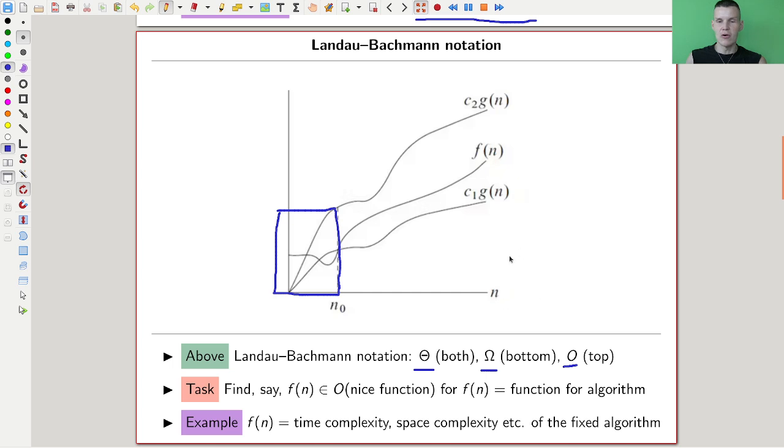You ignore up to and just consider algorithms from a certain point onward. Everything that happens in a finite amount of time is unimportant. You have theta, which means you're stuck. f in theta of g would mean f is stuck in between g up to constants. O is the upper bound, and omega would be the lower bound.